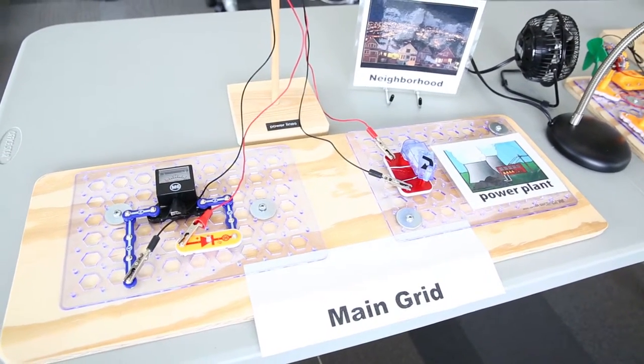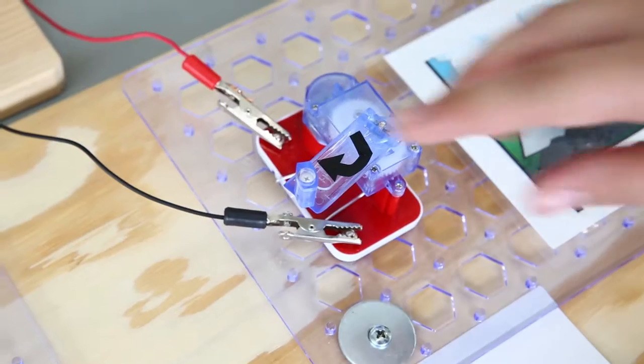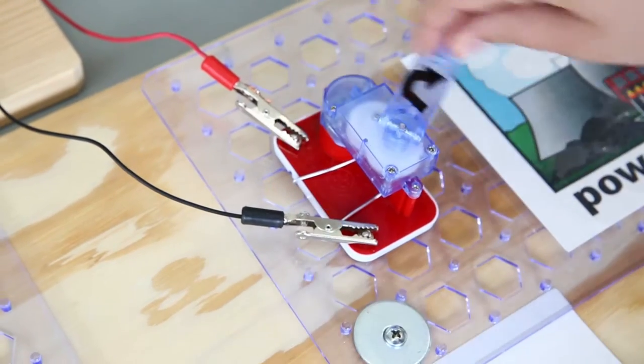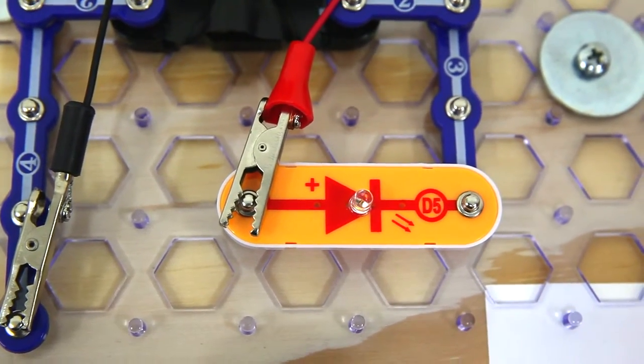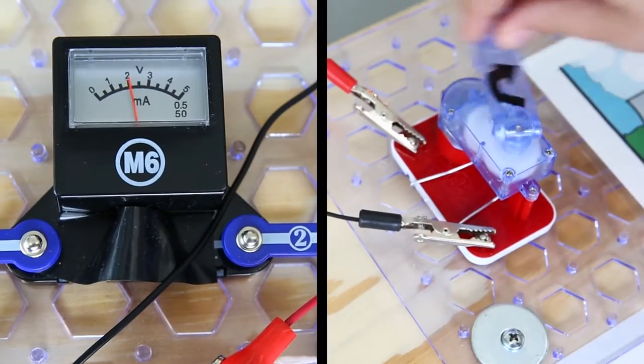The main grid neighborhood represents a neighborhood powered by the traditional utility grid. Explain to learners that when they turn the crank, they are acting like the power plant for the community. The faster you crank, the higher the meter goes.